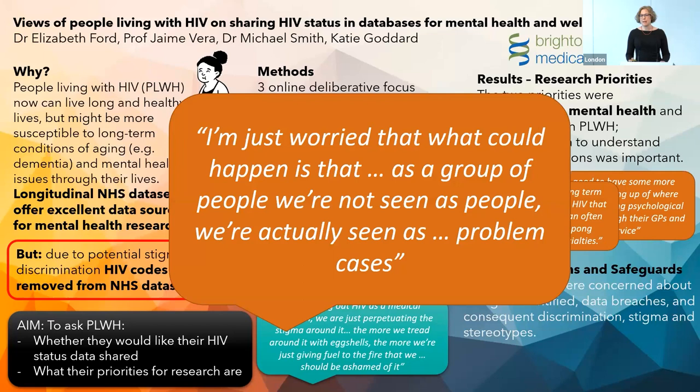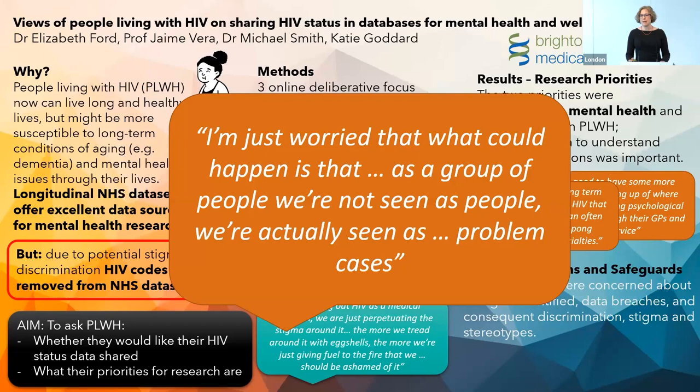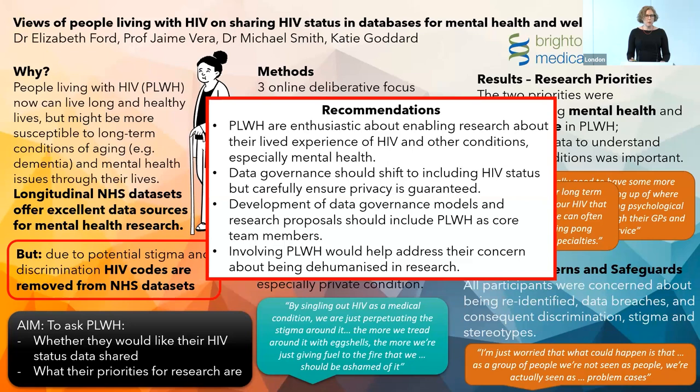All participants were concerned about being re-identified through data breaches and consequent discrimination, stigma, and stereotypes. They were worried that as a group they would be seen as problem cases rather than people. Our recommendations are that people with HIV are cautiously optimistic; we could start considering data governance to shift to include HIV status, carefully ensuring privacy, with people living with HIV as core team members as that governance model develops, and included as co-researchers on any subsequent projects.